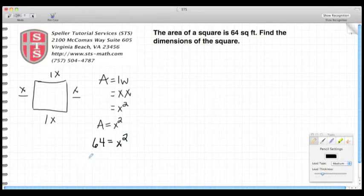To solve for X, I need to take the square root of both sides. So I'll take the square root of 64 and I take the square root of X squared. That evaluates down to X equals 8.